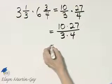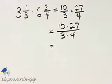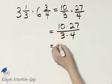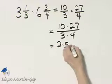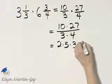I know 3 and 27 have a common factor of 3, and I know 4 and 10 have a common factor of 2. So I'll write 10 as 2 times 5, and then I'll write 27 as 3 times 9.